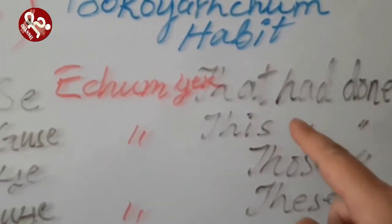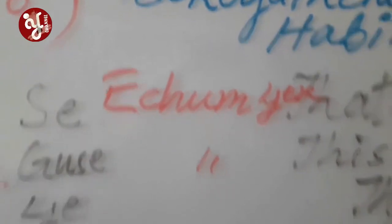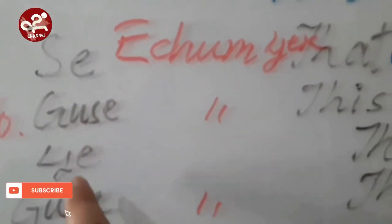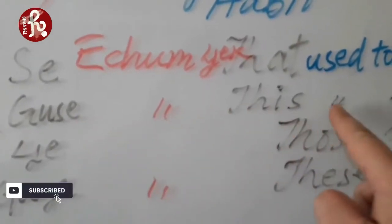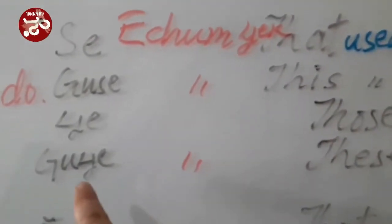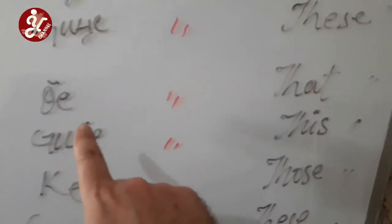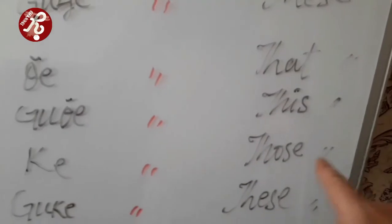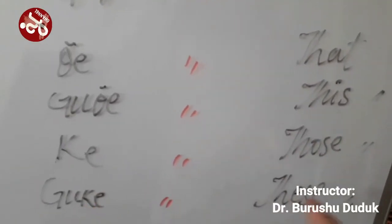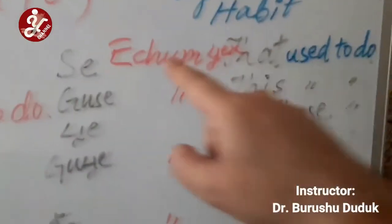'Gu se acham check' means 'those used to do.' 'Che acham check' means 'this used to do.' 'Gu se' means 'these used to do' — more than one. For liquids, soft things, foldable things, and flat things, the pronouns are: 'te acham check' means 'that used to do,' 'gu se acham check' means 'those used to do,' 'k acham check' means 'does used to do,' and 'du k acham check' means 'these used to do.'